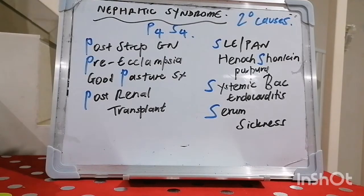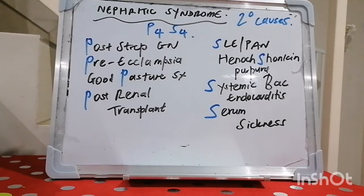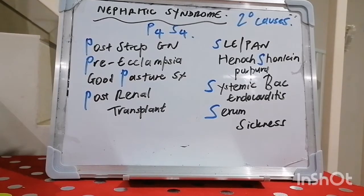So let's talk about nephritic syndrome. Today we're talking about secondary causes for nephritic syndrome, and the mnemonic is P4S4. We know that nephritic syndrome is an example of a glomerulopathy, and the pathophysiology behind glomerulopathy is largely autoimmune phenomenology.